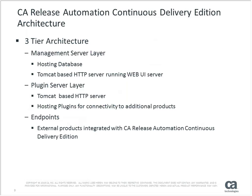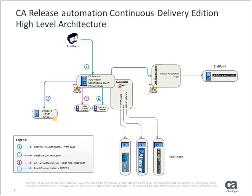Next, I want to show how Release Automation CDE maps to this. Release Automation CDE is a companion product that comes with Release Automation. Again, it's a three-tier architecture based on Tomcat. We have a central management server — a Tomcat instance running at the top end. We then have our abstraction layer: our plugins, which can be remotely installed or on the same machine as the management server. The endpoints are the products you're connected to.